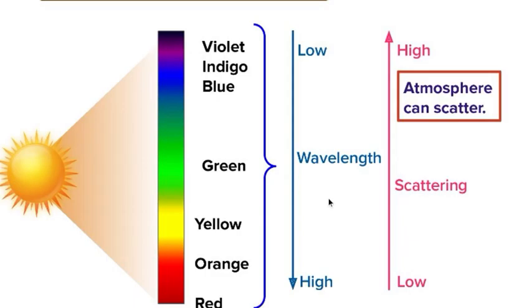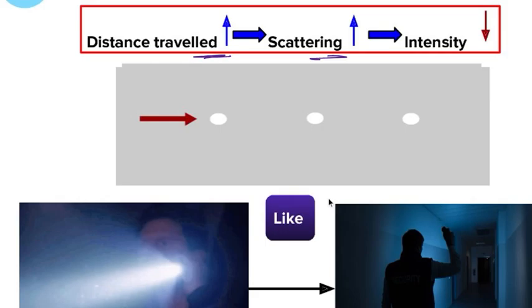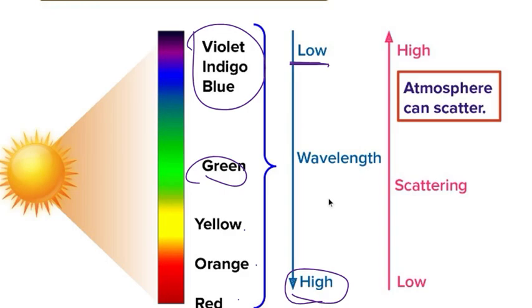In smoggy, foggy weather we can see the beam scattering. But for the sky, as particles are very small, red, orange, yellow can't scatter. They can't scatter very high wavelength. That means violet, indigo, blue can scatter.